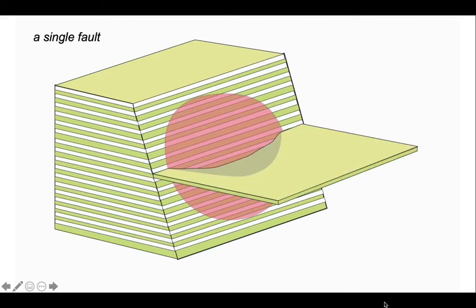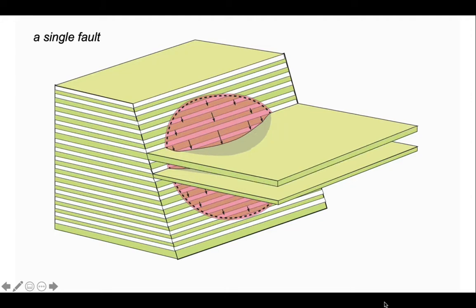So let's add a layer to see how this works. We can see we've got displacement of that layer across the pink area but not at the margins. So if we look at the fault slip trajectories, they're down like this - it's a normal fault, so the arrows are displaying the direction of slip.